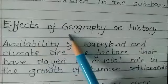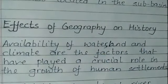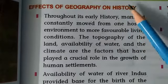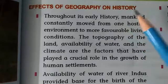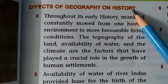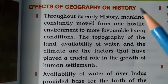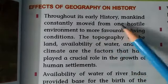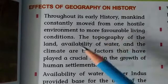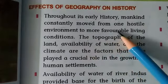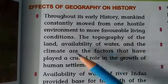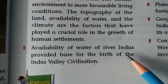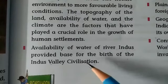Effects of geography on history: the impact of geography on history and current society. Geography affects migration, culture, history, and other aspects of society. Throughout early history, mankind constantly moved from hostile environments to more favorable ones with better living conditions. The availability of water from the river Indus provided the base for the birth of the Indus Valley Civilization.